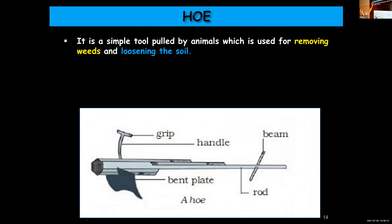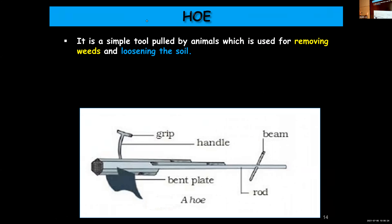Hoe is the second agricultural implement. It's a simple tool pulled by animals. We use this device for loosening the soil, turning the soil, and also for removing undesirable or unwanted plants — weeds — from the field. The hoe can be used to remove weeds or to make the soil loose, and it is also pulled by animals.